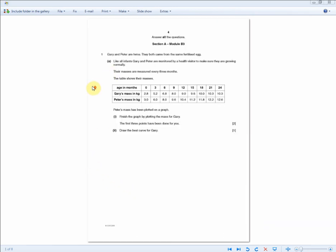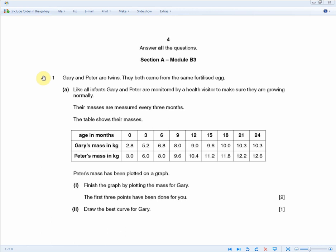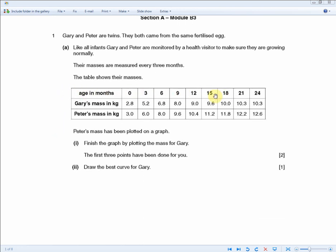This question is all about plotting graphs. So if we zoom in and let's begin. So Gary and Peter are twins. They both came from the same fertilized egg. Like all infants, Gary and Peter are monitored by a health visitor to make sure they are growing normally. Their masses are measured every three months. So the table shows their masses. So the age in months, going up in three month intervals, and then Gary's mass and Peter's mass. So Peter's mass has been plotted on a graph already. Finish the graph by plotting the mass of Gary. The first three points have been done for you.